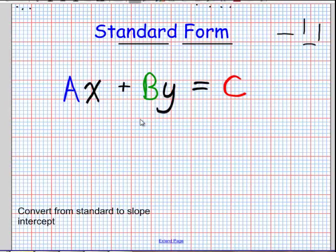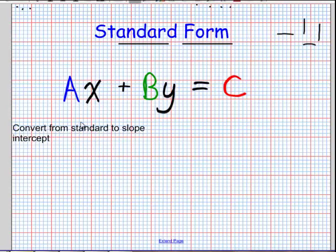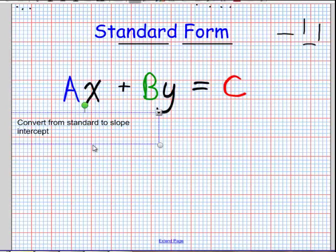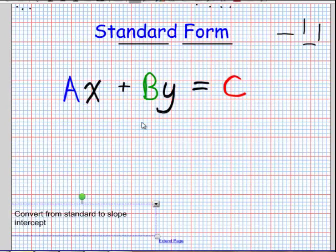And one of the objectives for standard form, a lot of students like to look at linear equations in slope-intercept form. So let's convert this standard form into a slope-intercept form. So if I'm going to do that, we have to isolate the y. We want to get the y by itself. So we're going to have y equals something with an x. So that's our goal, is to get y equals something.